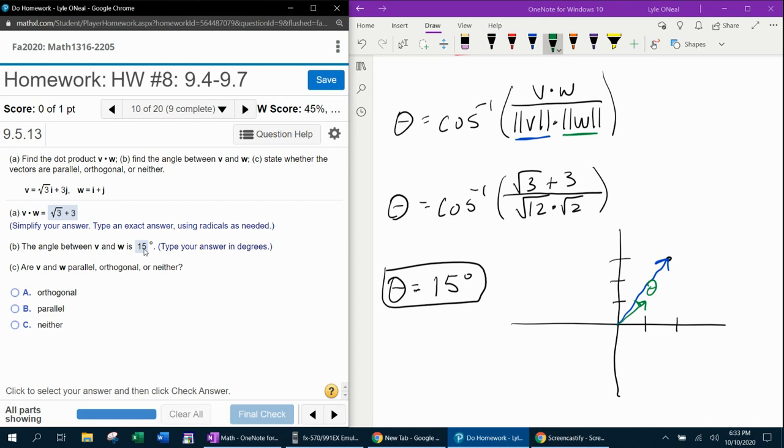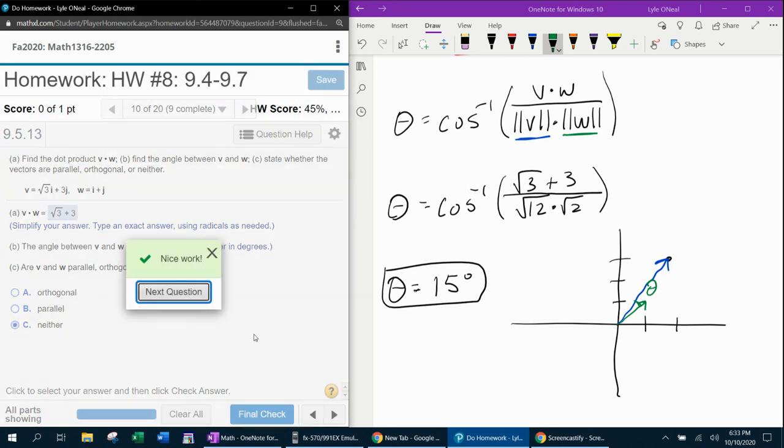Did we get a dot product of 0? If not, it can't be orthogonal. Is the angle 0 or 180? If not, it can't be parallel. So these are neither, and we're done.